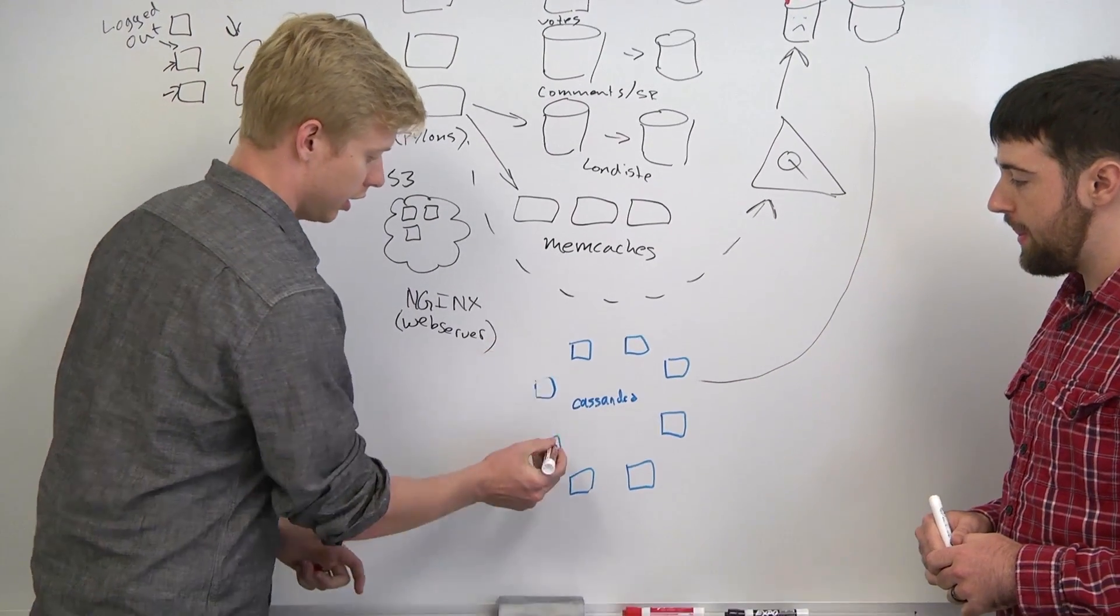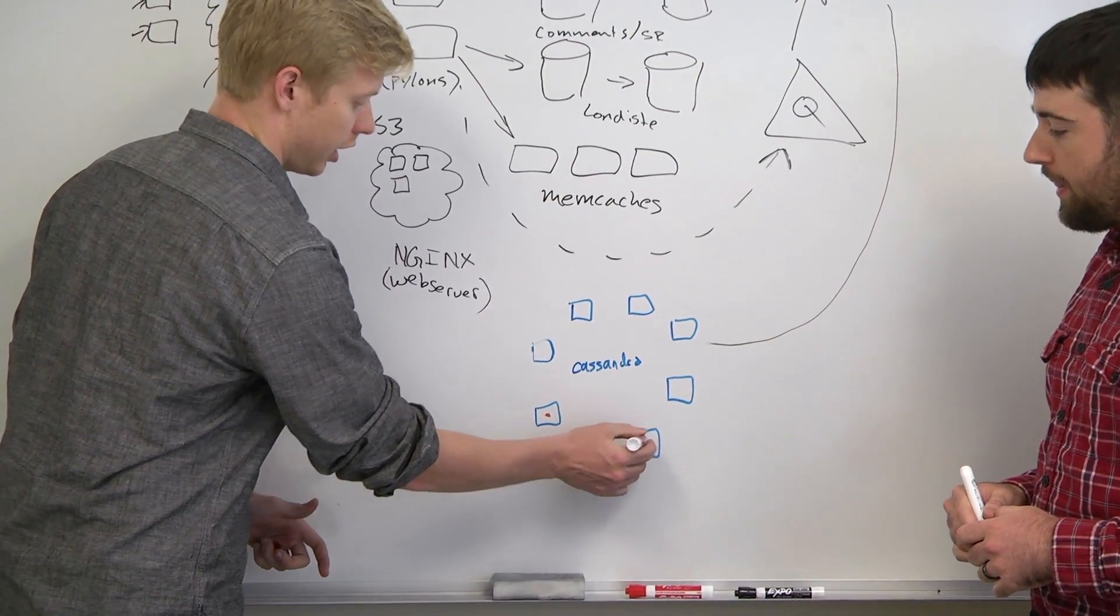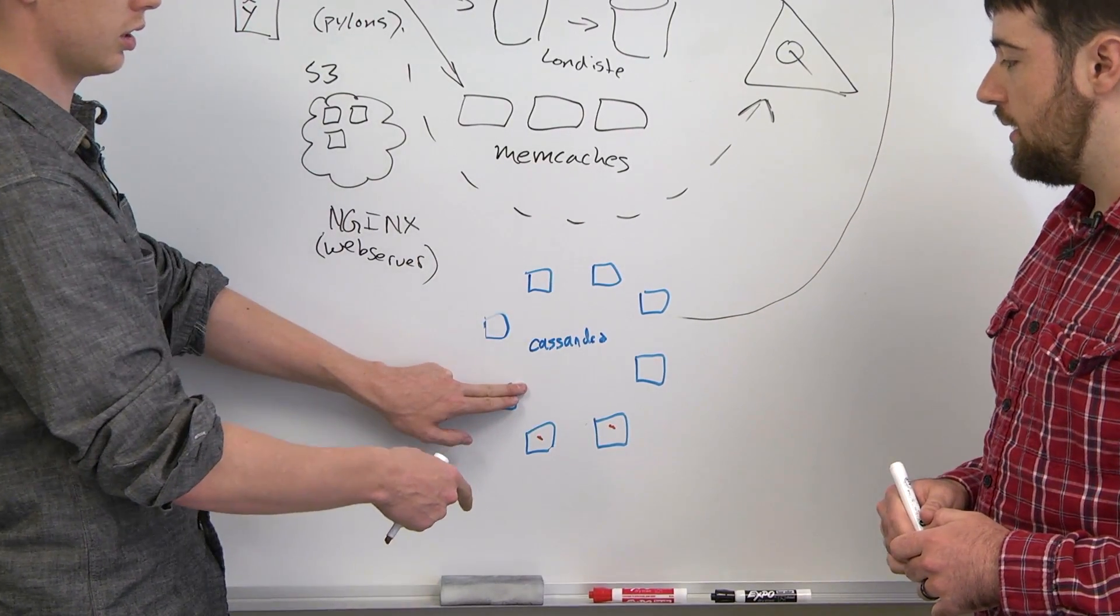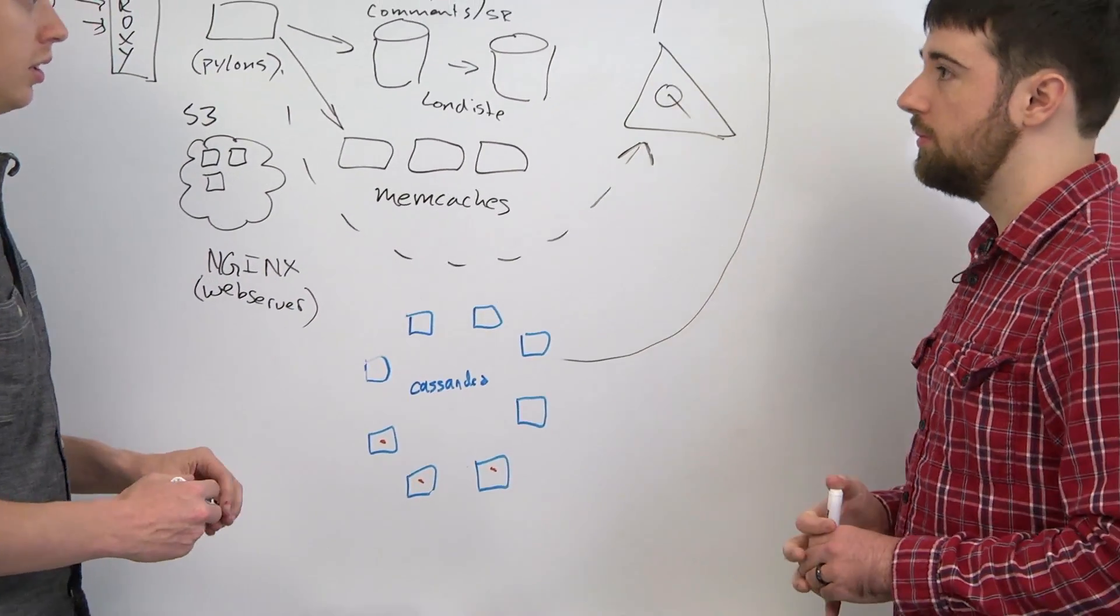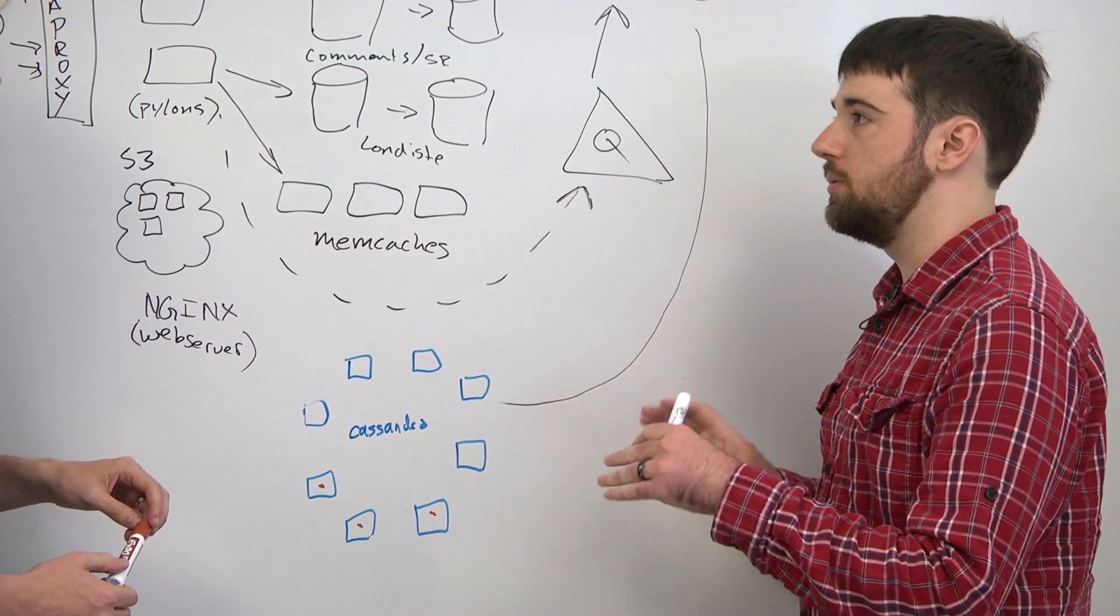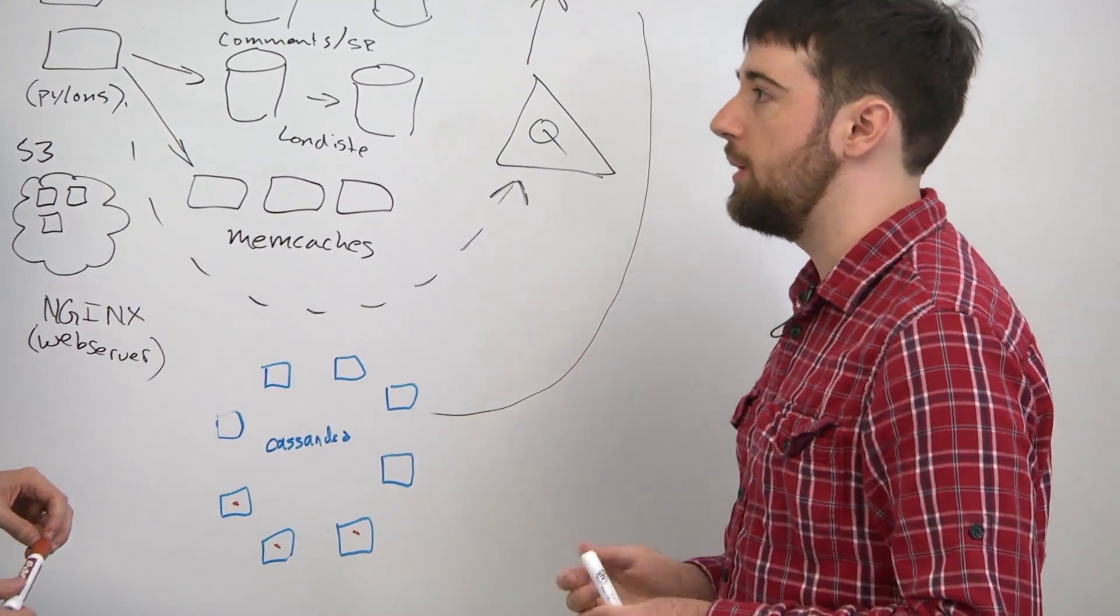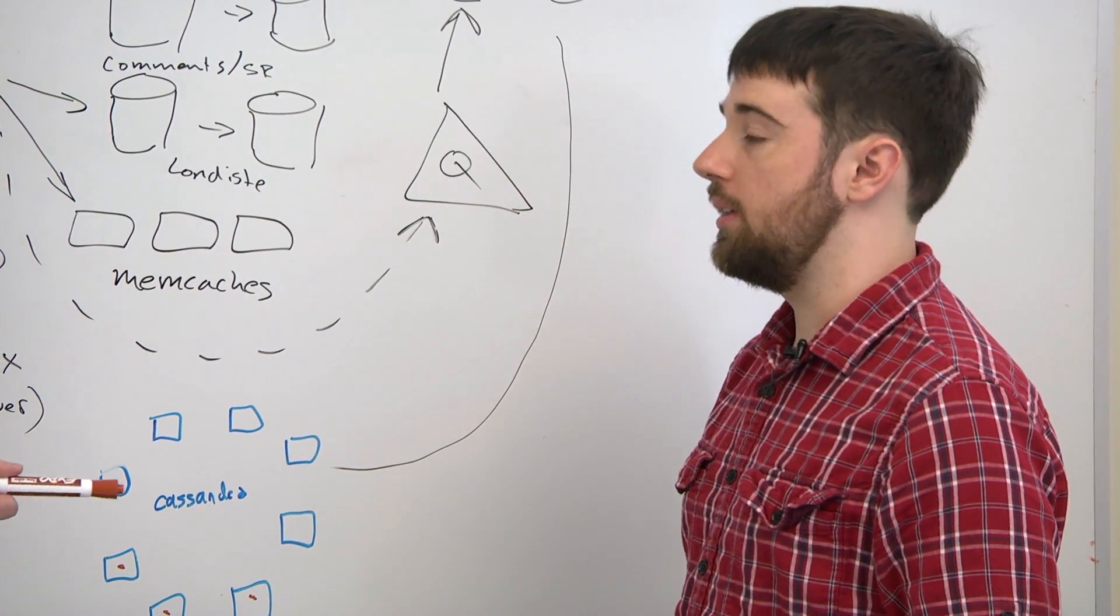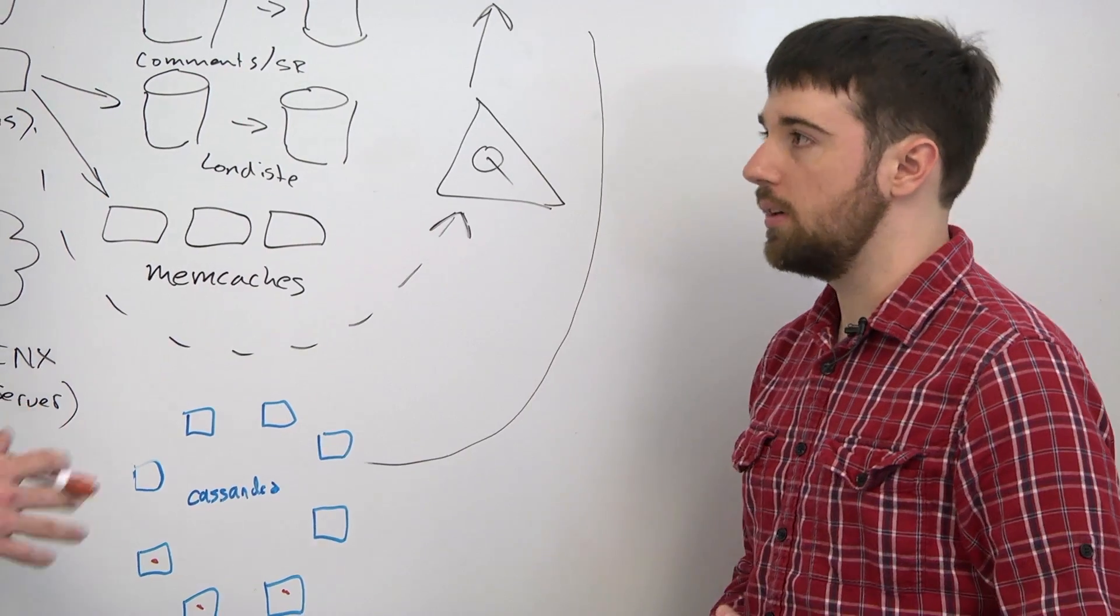Let's say you have content on this guy, this guy, and this guy, and you lose this node. Does the content get redistributed? No. They're assigned a key space and you have to move tokens if you want to rebalance the ring. And that's something that you as a developer have to do? Yeah, that's an operational thing.